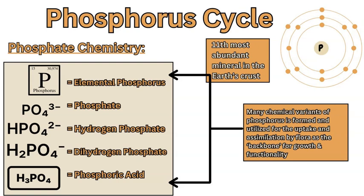The element phosphorus has an atomic number of 15. It has 15 electrons, 15 protons, and a mass of about 30.9. This element is the 11th most abundant in the crust as a mineral. It is an integral element for all biomass, vegetation, and flora for growth, and it forms the backbone of both DNA and RNA. Plants and vegetation require this element, but it is also a limiting factor because it exists in small quantities — if too high or too low, it can affect the growth and quality of vegetation and soil.